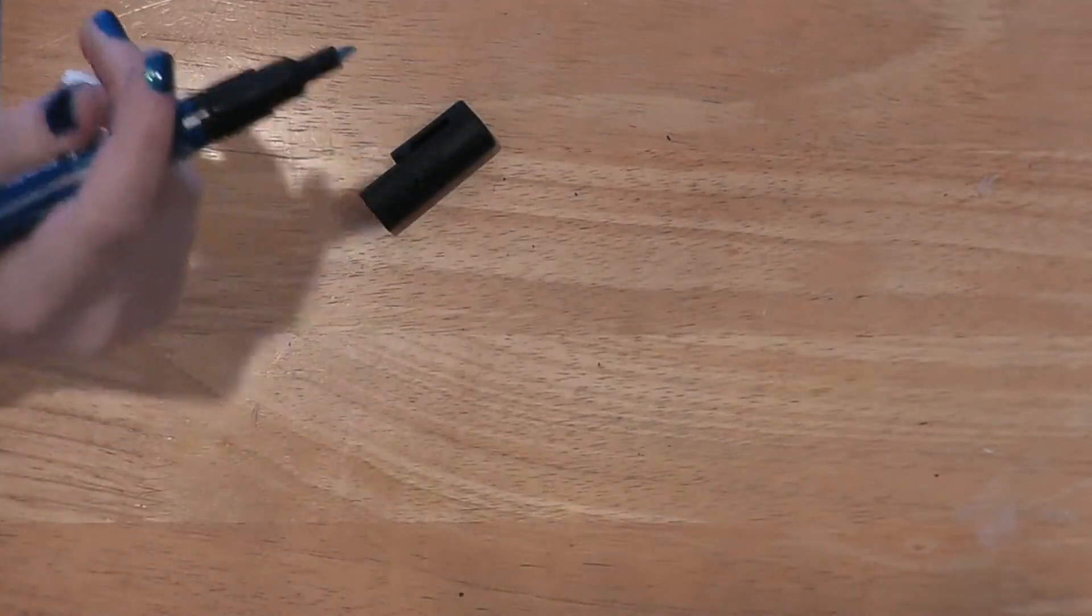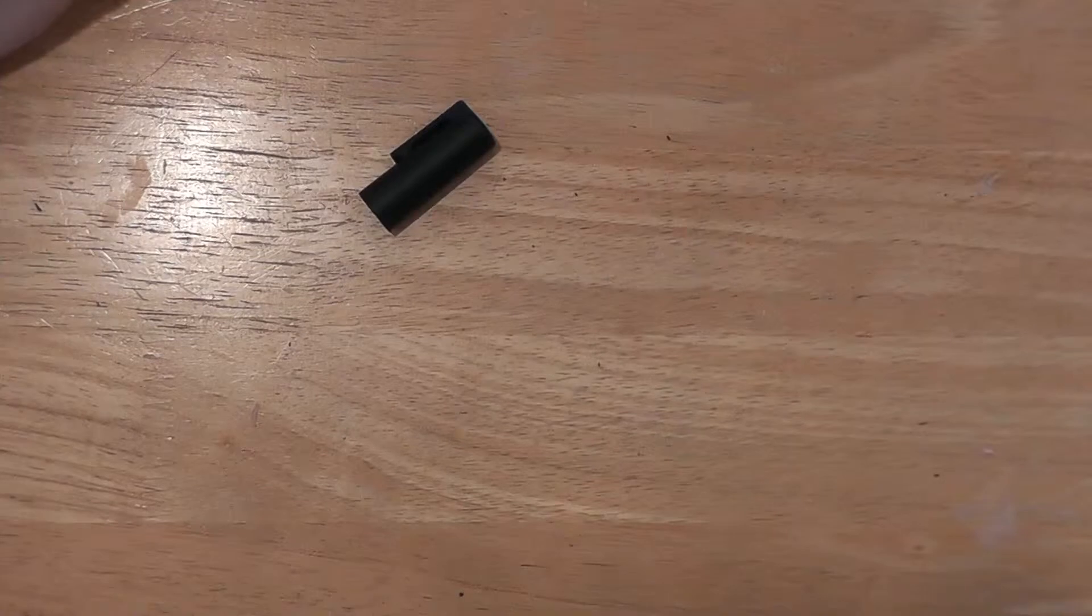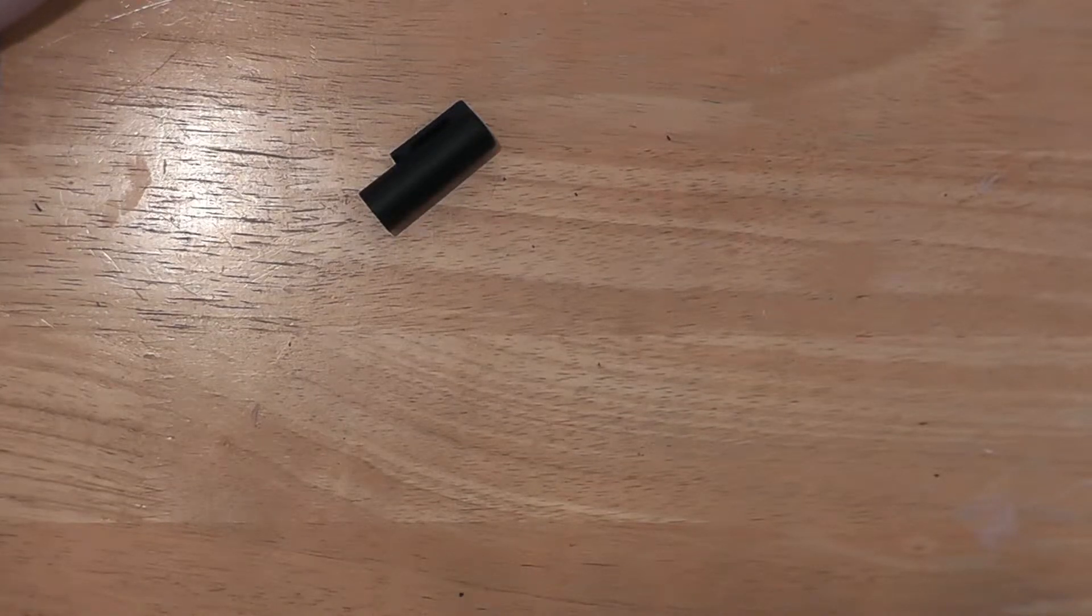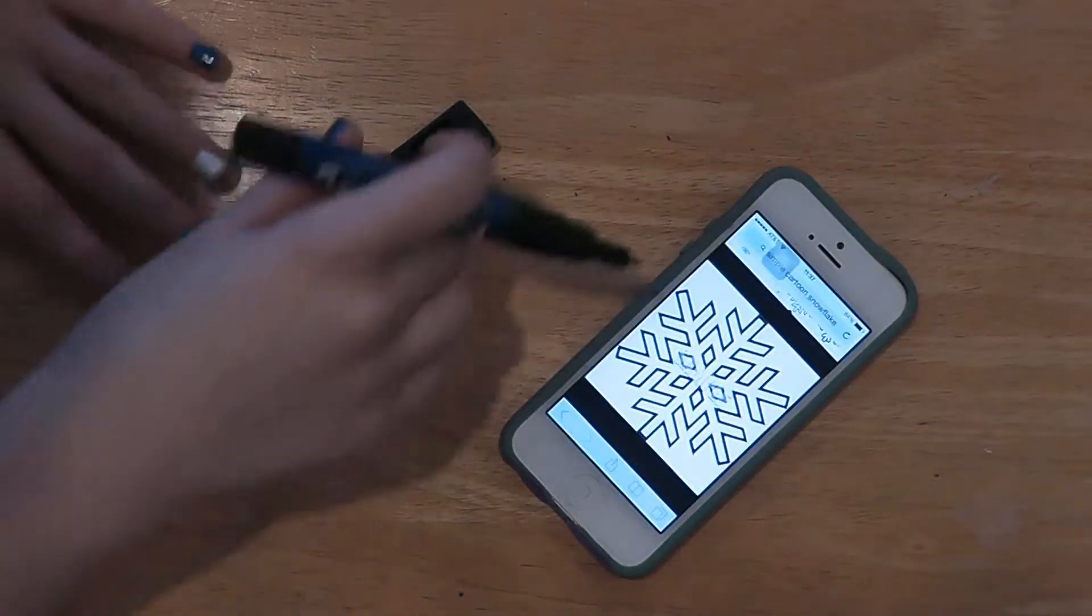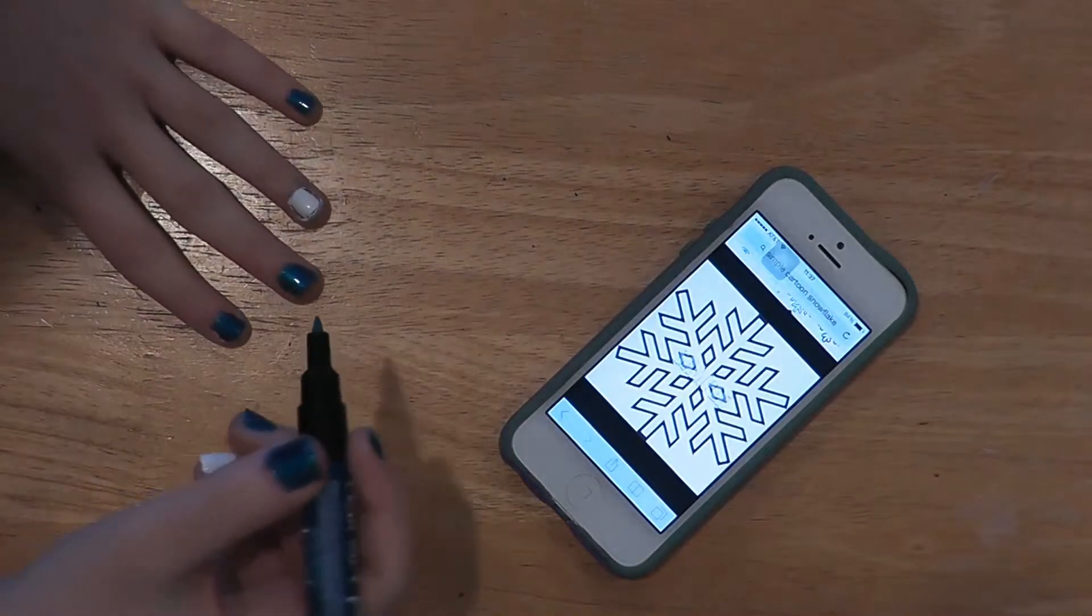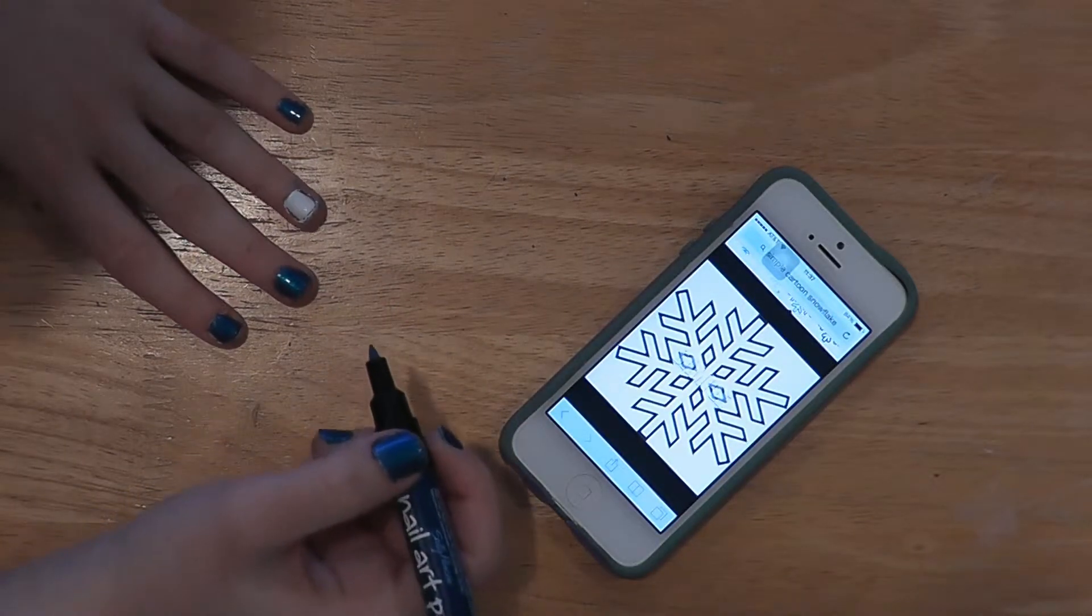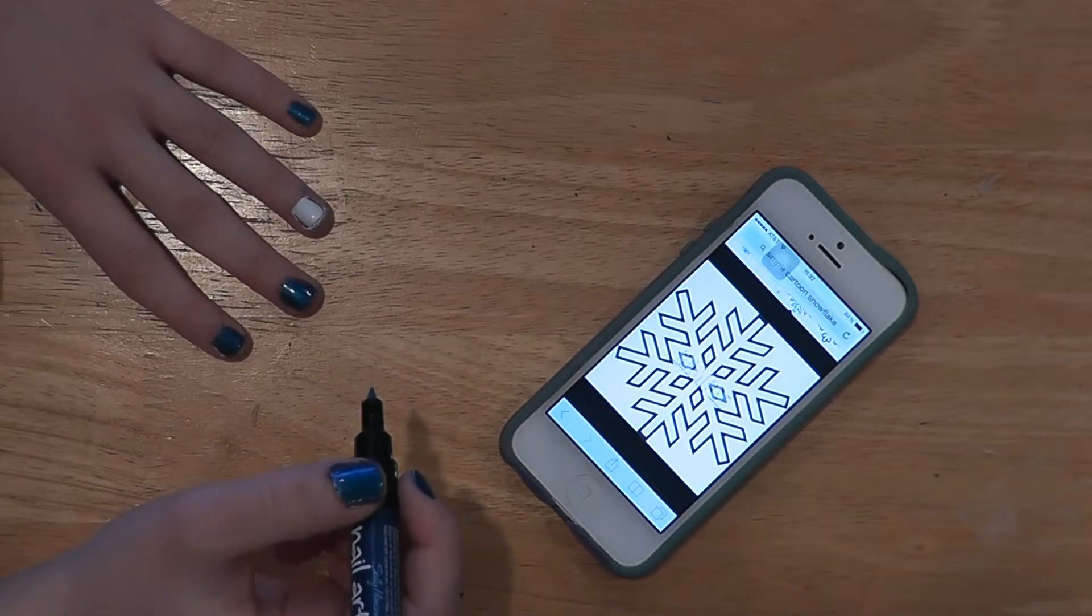You're just going to pull up whatever picture you're going off of. You can always do this with any different colors or any different nail design, it's just a simple thing. I'm going to pull up the picture of the snowflake. It looks like it's just an asterisk to start out with.